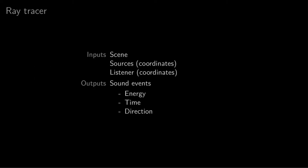The first component is the raytracer itself. The raytracer takes as an input the scene, which is the 3D model that we want to simulate. It also takes the coordinates for one or multiple sources, as well as the coordinates for a listener, which corresponds to a person or a microphone usually. And what comes out of the raytracer, its output is a list of what we call sound events. And sound events each correspond to a specific amount of energy at a specific moment in time, with a specific direction of arrival.